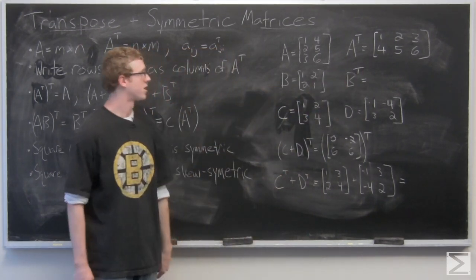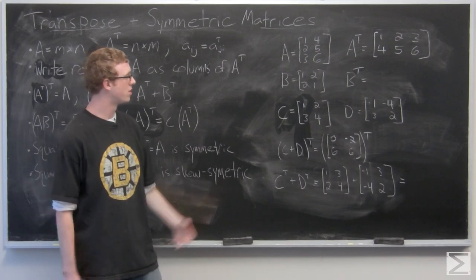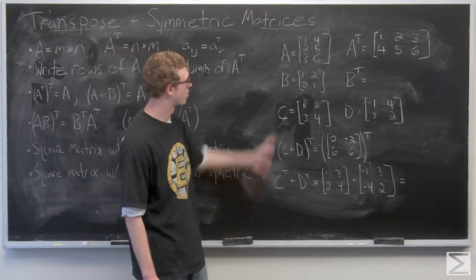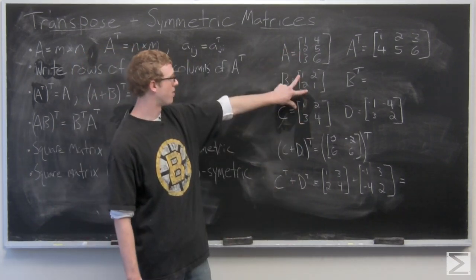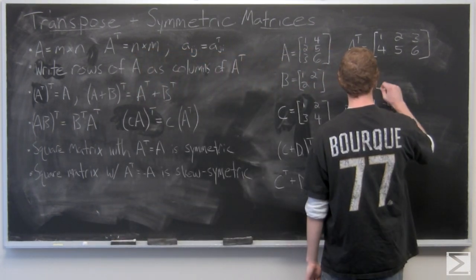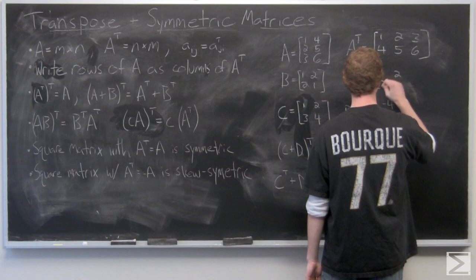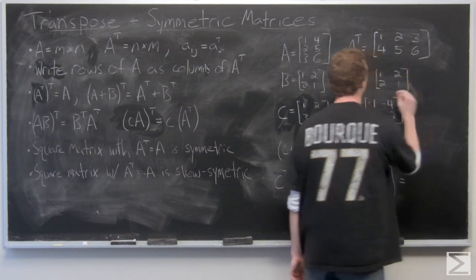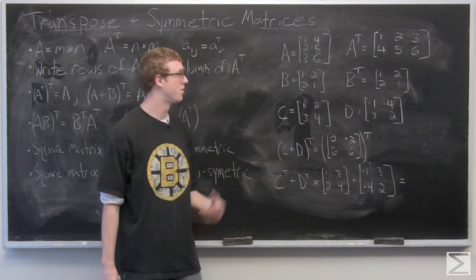So now we have a matrix B equals 1, 2, 2, 1. We're going to take this and just swap the 2s. Because it's a square matrix, the two 1s remain in the same place. And you get 1, 2, 2, 1.